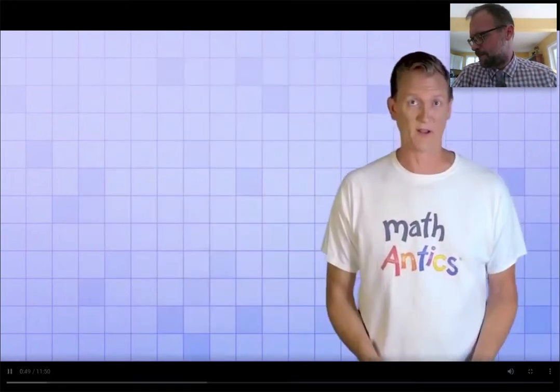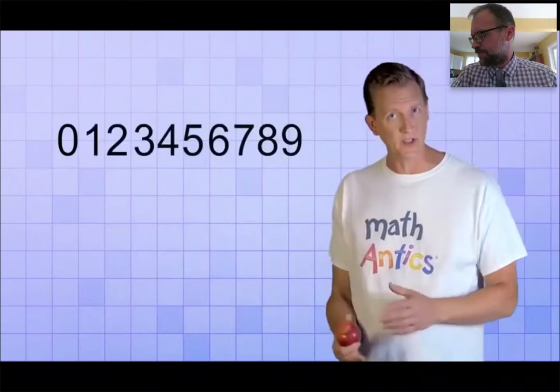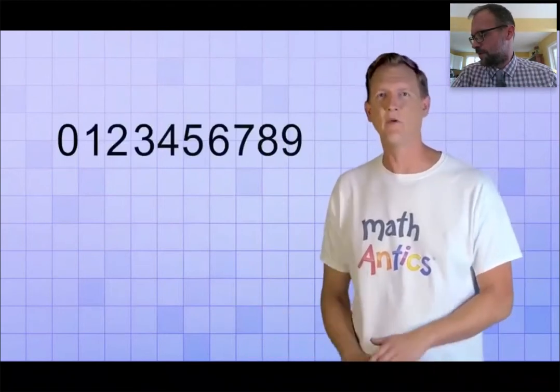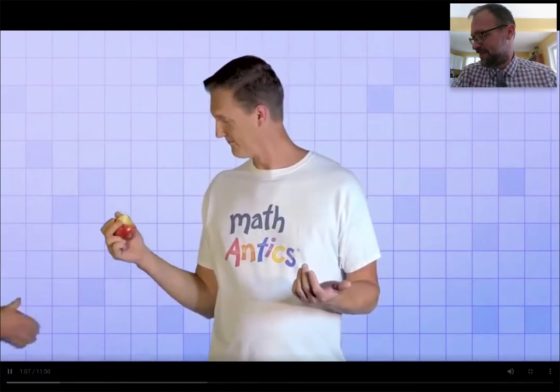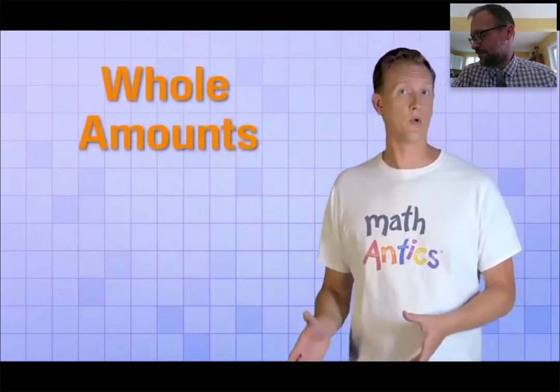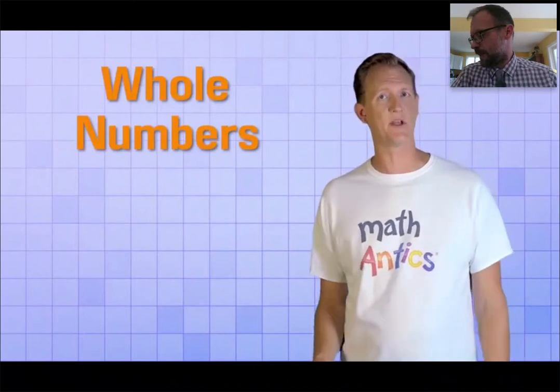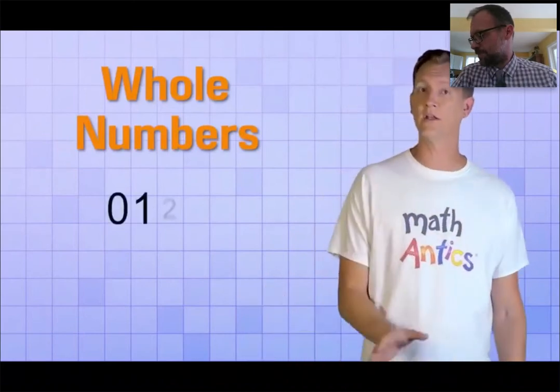It's a pretty amazing system if you think about it. It only has ten digits, but those digits can be reused in different combinations to count any number from zero all the way to trillions of apples and beyond. But as amazing as it is, there's just one little problem with our number system so far. Can you guess what it is? Let's find out if your guess is correct. What if you don't have a whole apple? In the place value video, we only learned how to count whole amounts, or what we call whole numbers, which is the set of numbers you get if you start with zero and then count by ones, one, two...